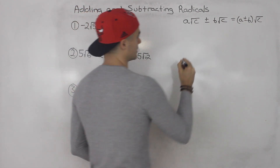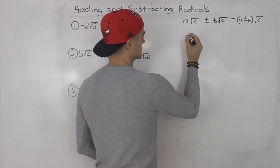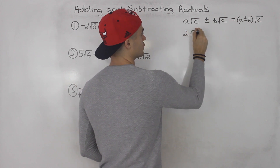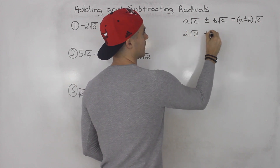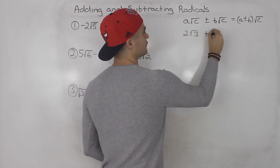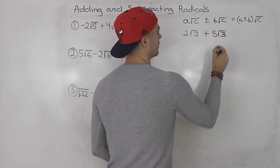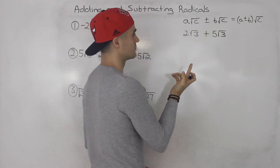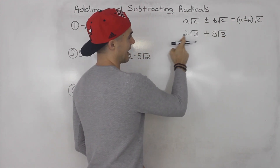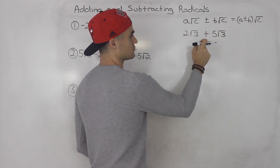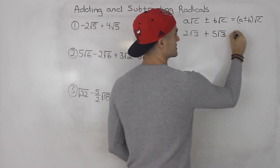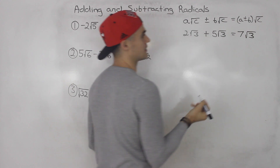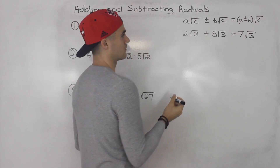For example, let's say we have 2 root 3 plus 5 root 3. Notice these radicals are the same, so we can add the coefficients that are in front. 2 plus 5 gives us 7, and then the radical we keep the same.